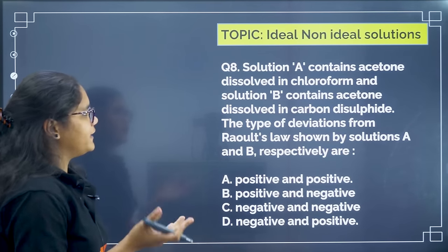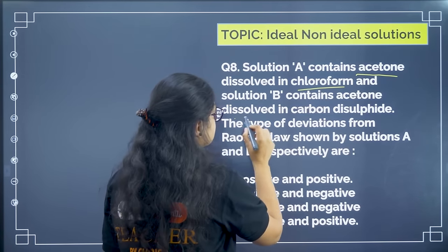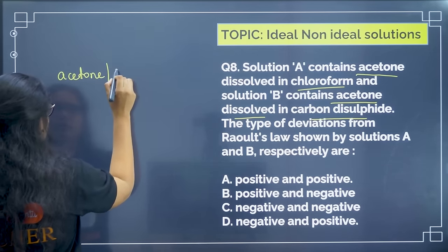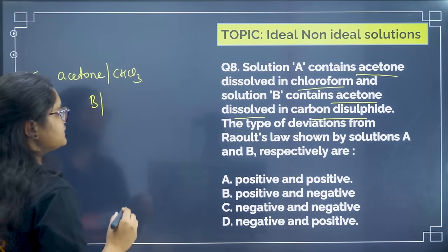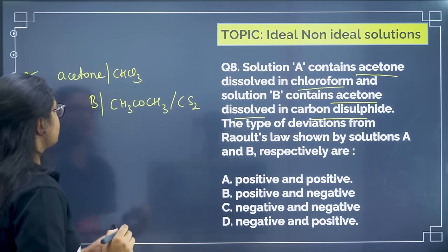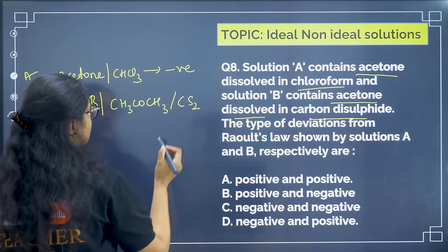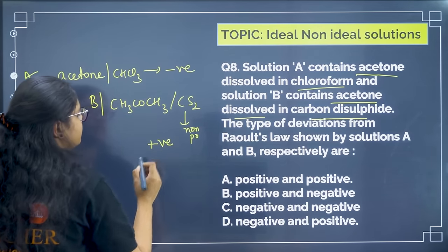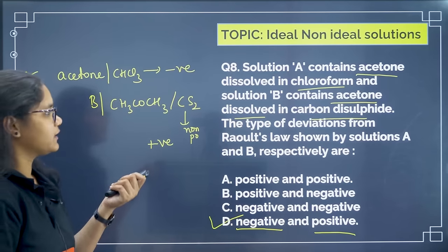This is a simple ideal/non-ideal solution question. Solution A has acetone in chloroform — both polar components, so A-B interactions are stronger, giving negative deviation. Solution B has acetone in carbon disulphide — CS₂ is non-polar, so interactions are weaker, giving positive deviation. Correct answer is option D: solution A shows negative deviation and solution B shows positive deviation.